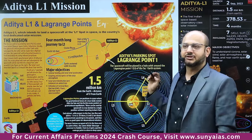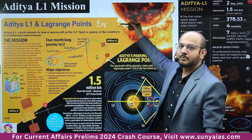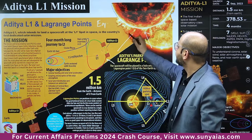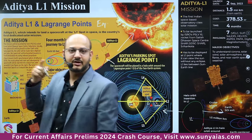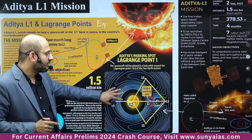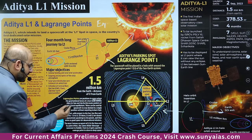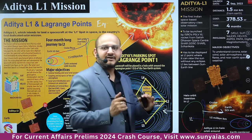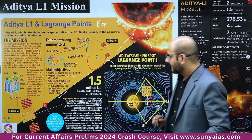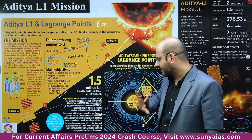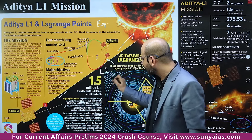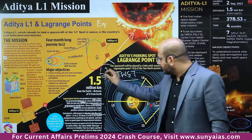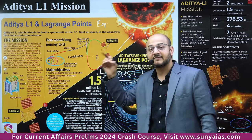The objective of Aditya L1 is to study the photosphere, chromosphere, and coronal ejections of the Sun that impact Earth's atmosphere. Lagrange points are positions in space where gravitational forces of a two-body system — like the Sun and Earth — create pockets of gravitational equilibrium, holding an object in a halo orbit. At L2, you find the famous James Webb Space Telescope, looking far back in time.